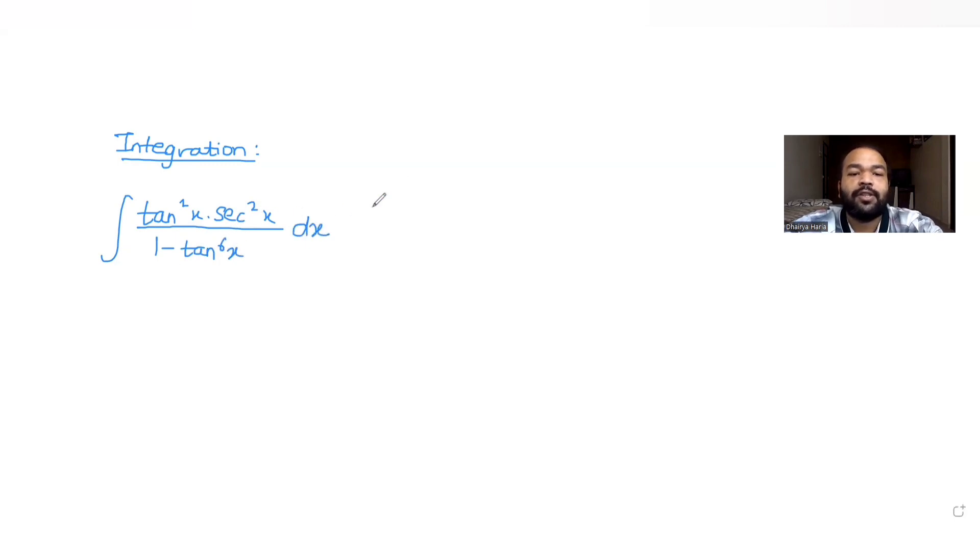When I see this tan⁶x, I understand that I need to convert this denominator in the form of a² minus b². To convert it in terms of b², I'll substitute tan³x as t.